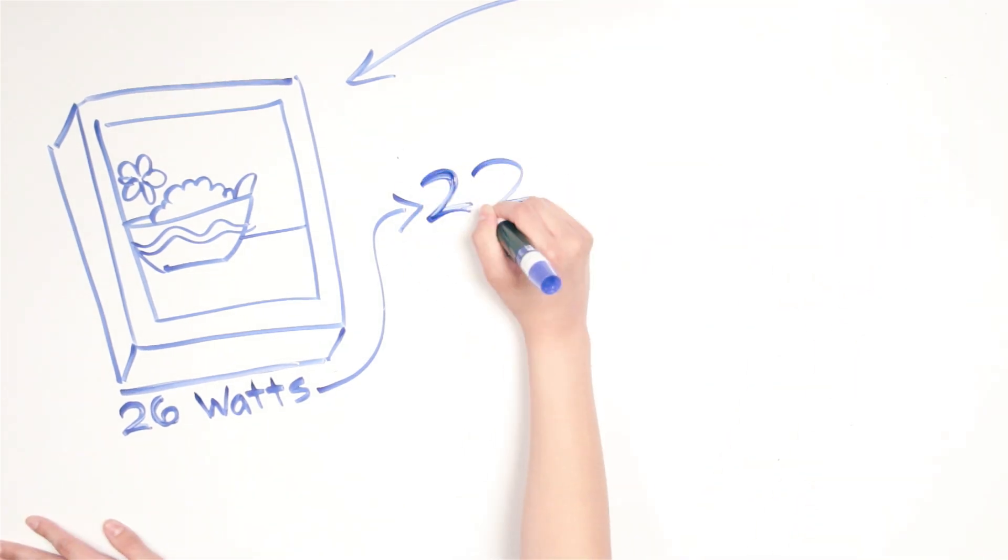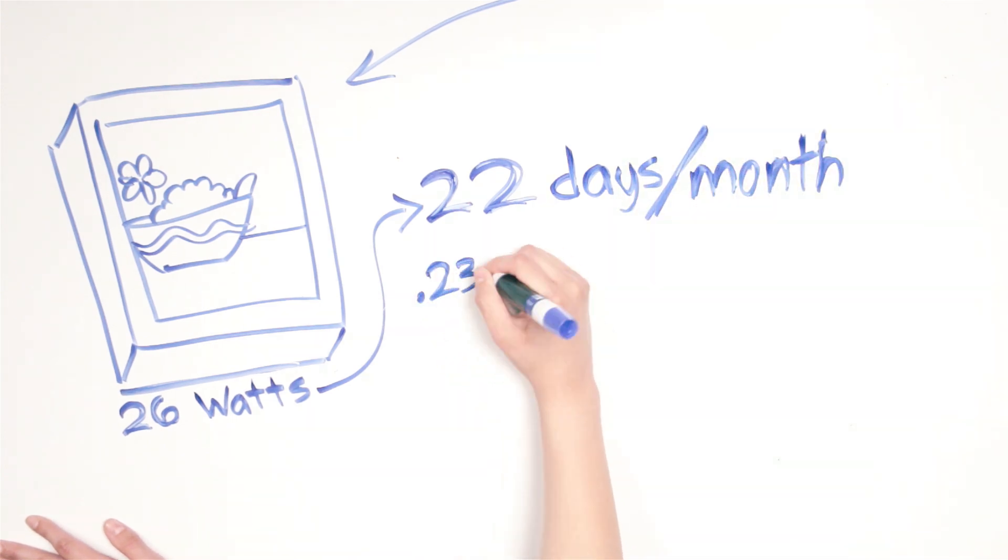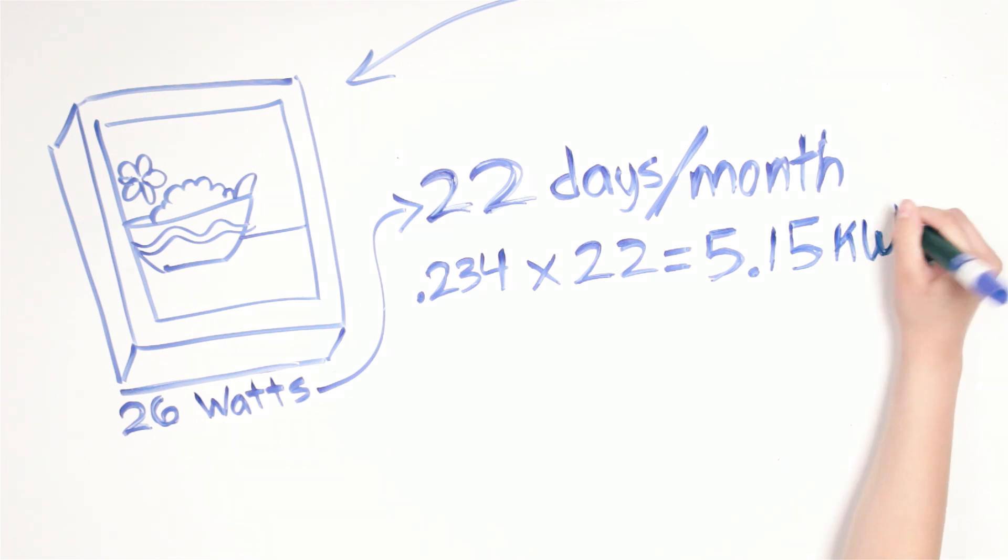And if you'll power the lightbox 22 days a month, that's .234 times 22, equaling 5.15 kilowatt hours per month.